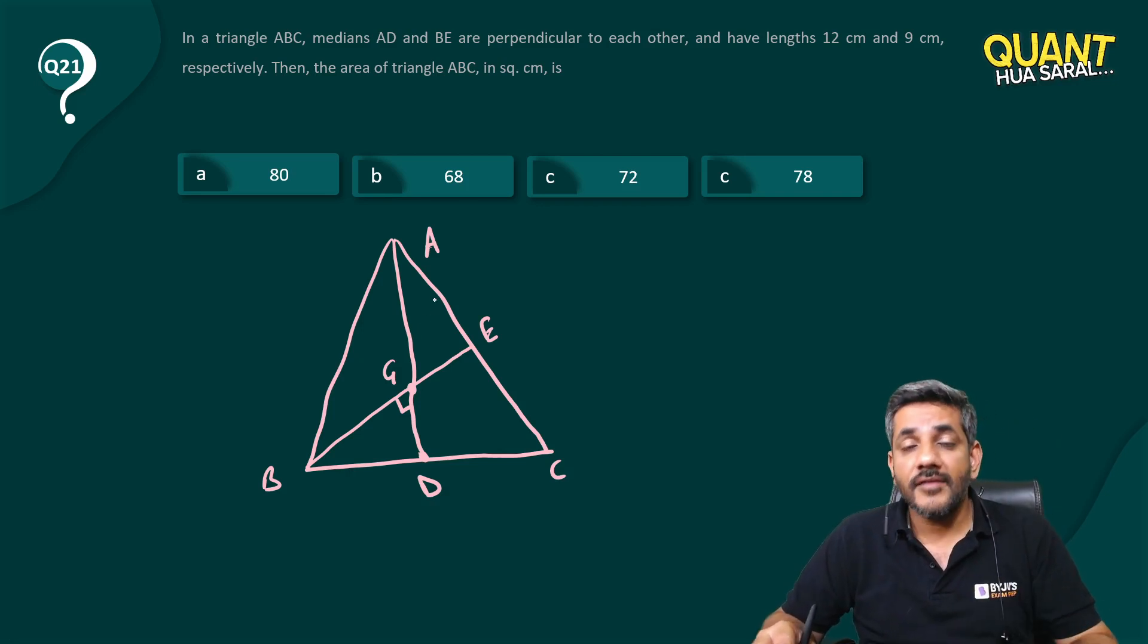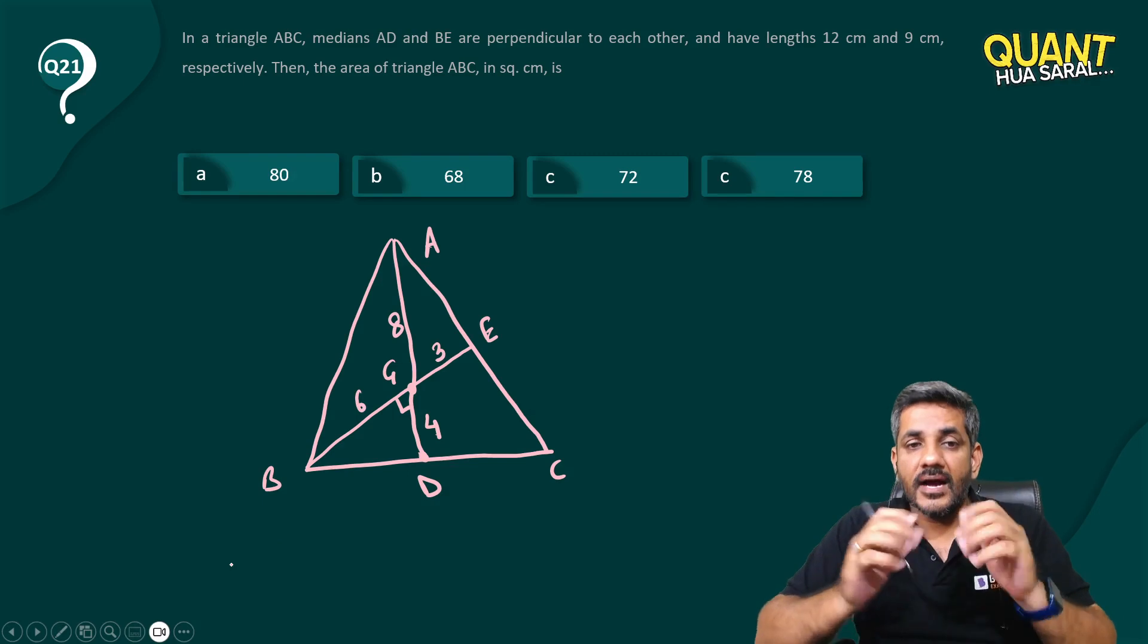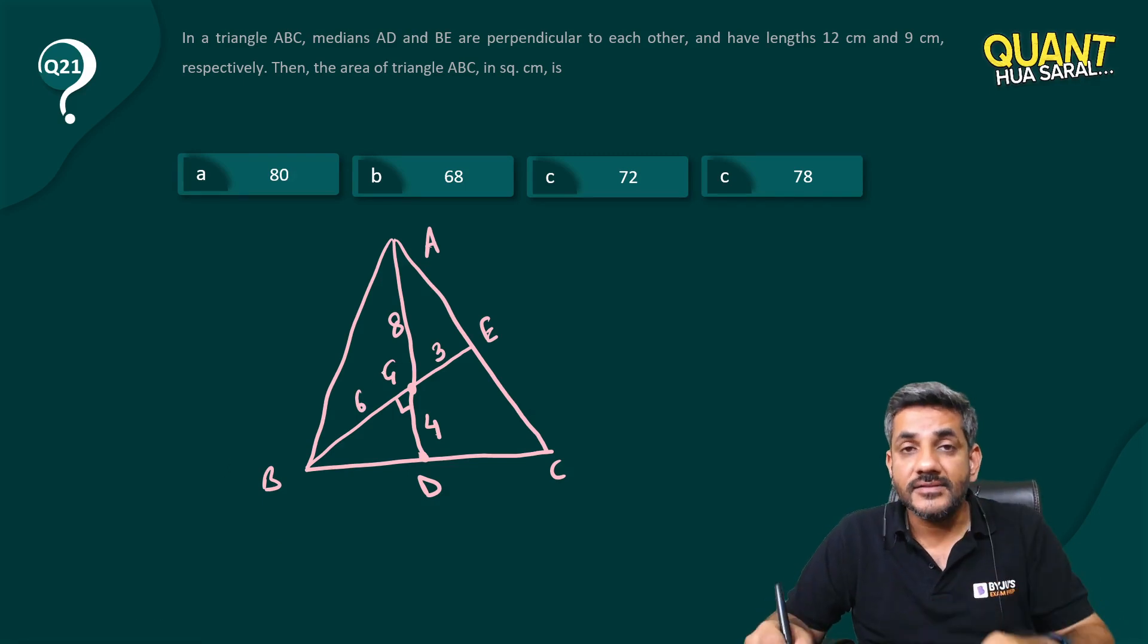Now length of AD is 12, divided in a ratio of 2:1, 8 and 4. BE is 9, divided in a ratio of 2:1, 6 and 3. So here I have 8, and here I have 6 and 3. Question says what is the area of triangle ABC?